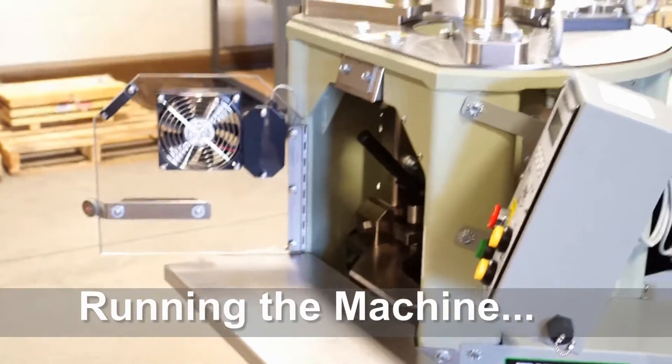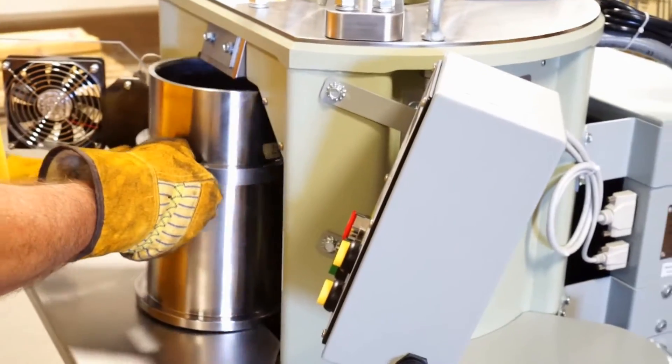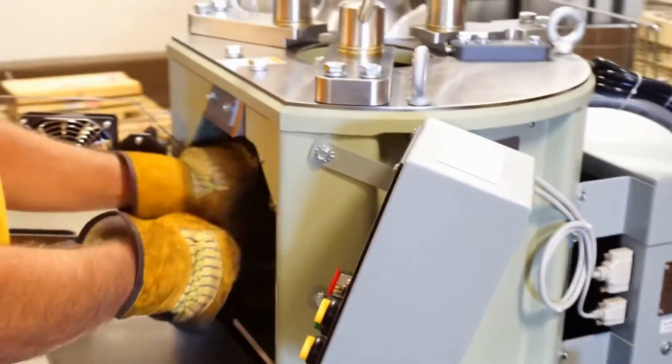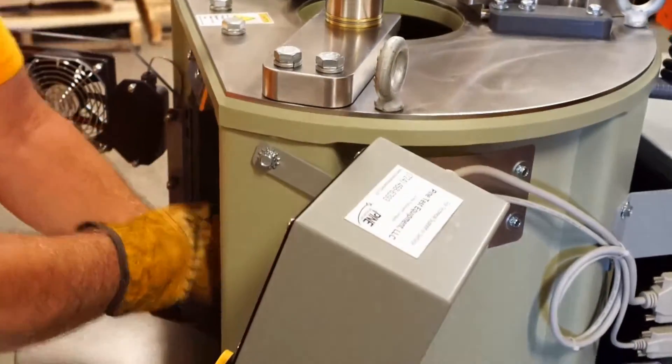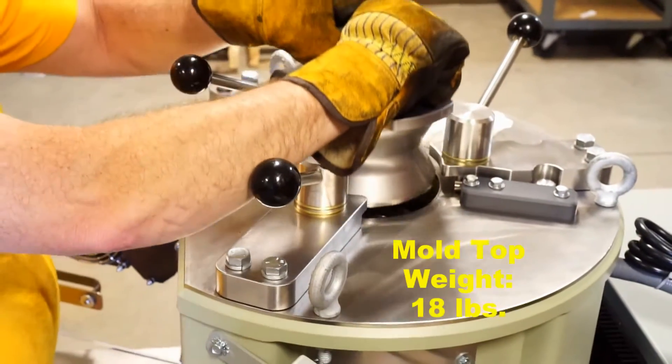The mold is placed in the compaction chamber and secured to the gyrating base of the G-2 by two integral clamps. Once the mold is clamped into place, the mold top is installed at the top of the machine.